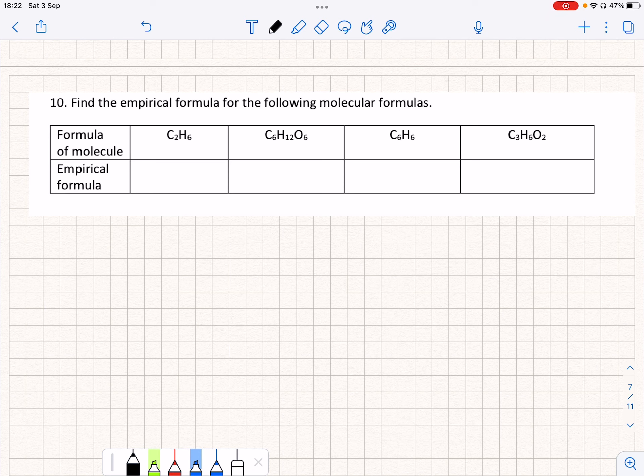So with that in mind, I can see that I can simplify this first one, because it's a 2 to 6 ratio. So that simplifies to CH3.